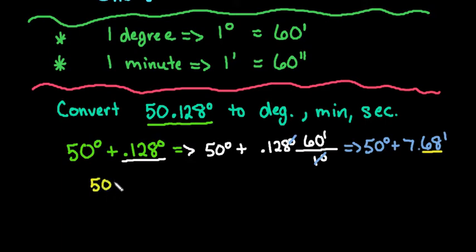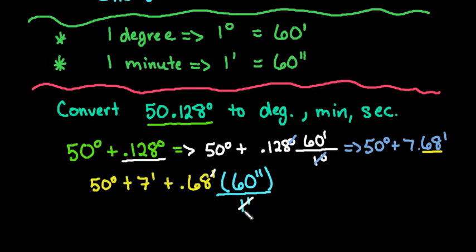So we would take our 50 degrees plus our 7 minutes because that's how many whole minutes we have plus we're going to take the .68 minutes and we're going to convert this into seconds. So in order to convert this into seconds we're going to do essentially the same thing that we did here except we're going to use this conversion here where one minute is equal to 60 seconds. So we're going to take this times 60 and divide it by one minute. The minutes will cancel out and we'll be left with the unit seconds.